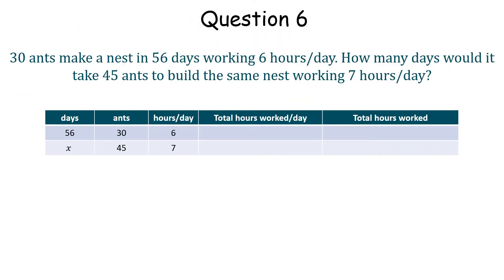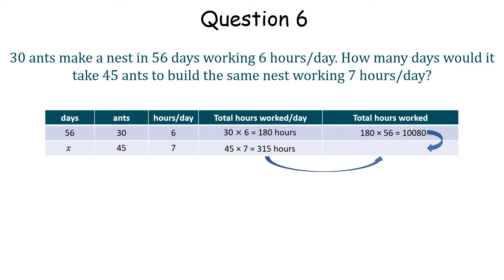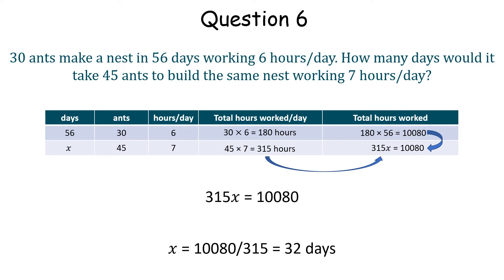The total amount of hours worked by the ants is 30 ants at 6 hours a day each, which is a total of 180 hours. The total number of hours by the ants over the 56 days is 10,080. Now we have 45 ants working 7 hours per day, which is 315 hours. Therefore, making and solving a similar equation, it would take 32 days for 45 ants to build a nest working 7 hours per day.